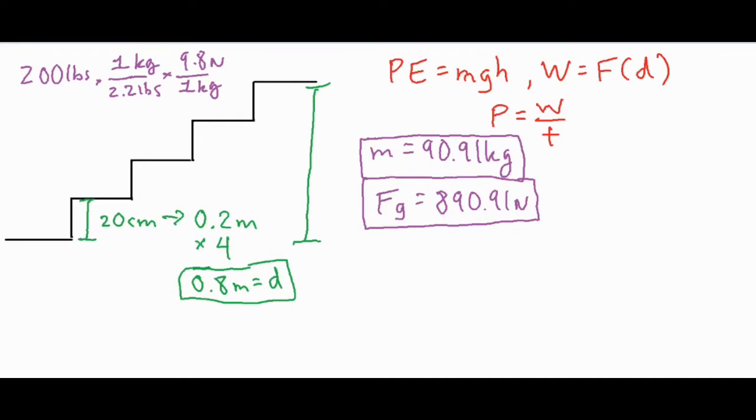All right, so from there we can go ahead and start doing some calculations. So we can figure out the amount of work done by taking the force that we are overcoming, the Fg 890.91, times our vertical distance of 0.8.